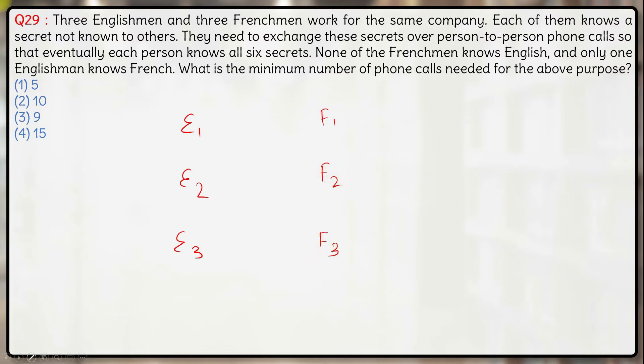They exchange secrets only over one-on-one phone calls, person-to-person phone calls. None of the Frenchmen knows English and only one Frenchman knows French. Let's say that Frenchman is F3 here. Only F3 knows French.